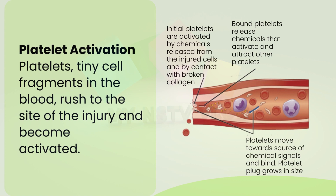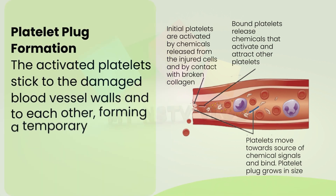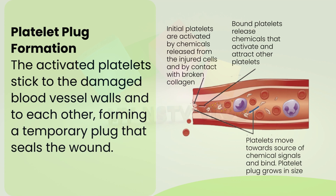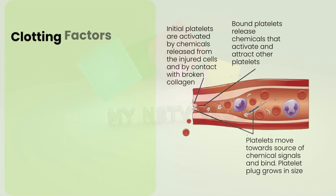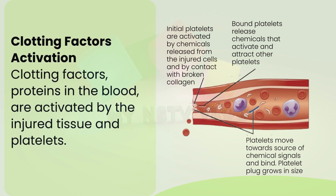Initial platelets are activated by chemicals released from the injured cells and by contact with broken collagen. Bound platelets release chemicals that activate and attract other platelets, which move towards the source of chemical signals and bind. The platelet plug grows in size as activated platelets stick to the damaged blood vessel walls and to each other, forming a temporary plug that seals the wound.